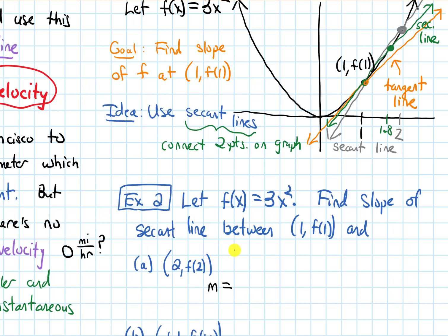Okay, so I want to find the slope between these two points. So if I use my slope formula, the change in y over the change in x, which is going to be f of 2 minus f of 1, subtracting the y values over, subtracting the x values, 2 minus 1. F of 2, if I plug 2 into this function, I get 3 times 2 squared, 3 times 4, which is 12.